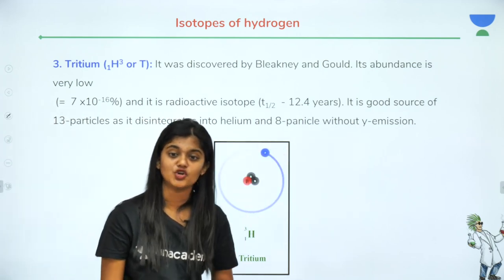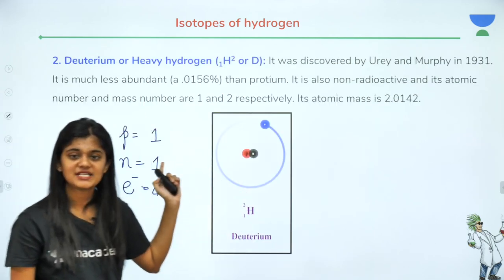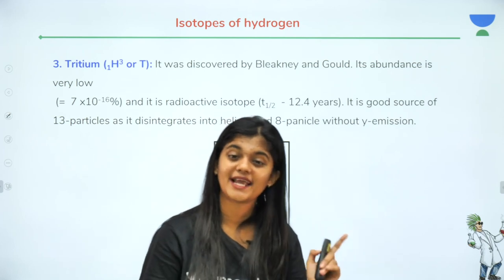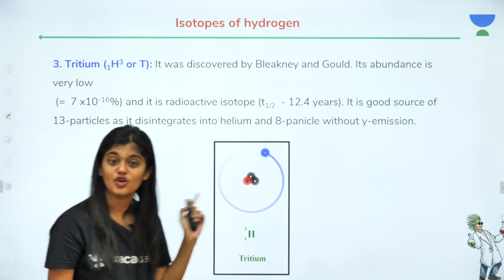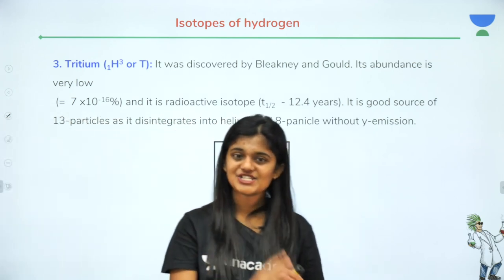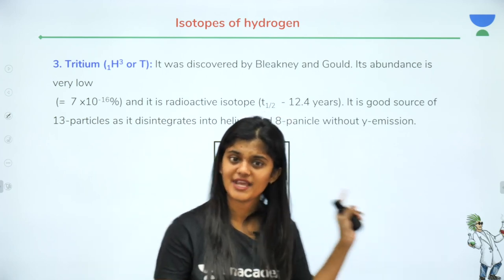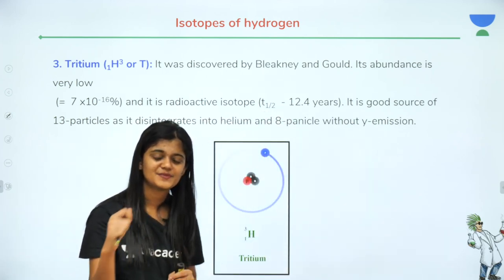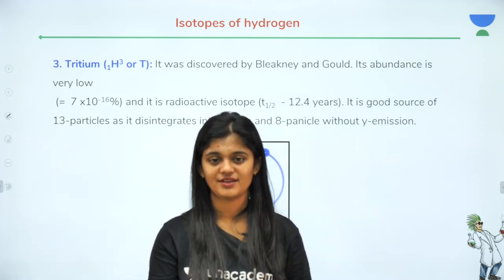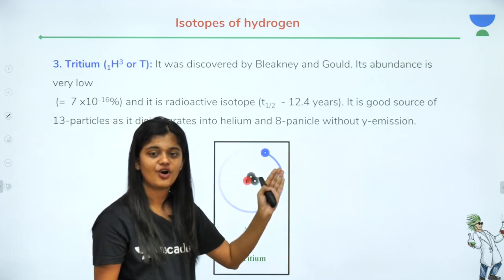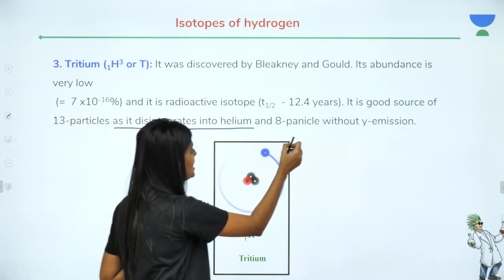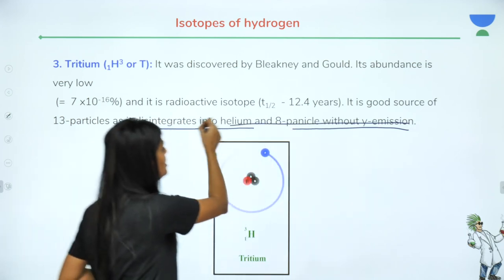Deuterium was discovered by Urey and Murphy. Tritium (T or ¹H³) was discovered by Blackney and Gold. Tritium's abundance is still very low. It is a radioactive isotope — so if asked in an MCQ which is the radioactive isotope of hydrogen, the answer is ¹H³. It is a good source of beta particles as it disintegrates into helium.